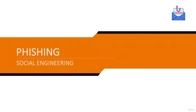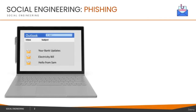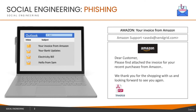Phishing is one of the most widely used social engineering attacks around the world, used by hackers to infiltrate organizations and trick people into divulging confidential or sensitive information. Let's say one fine day you receive an email in your inbox which says it's an invoice from Amazon. This email says it's from Amazon, contains an invoice, and says 'Dear customer, please find attached the invoice for your recent purchases from Amazon. We thank you for shopping with us.'